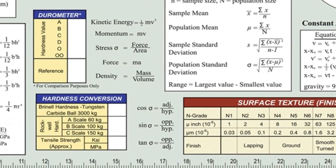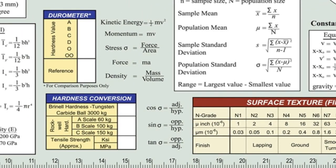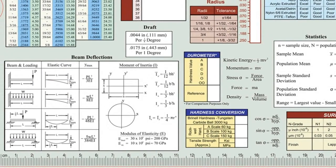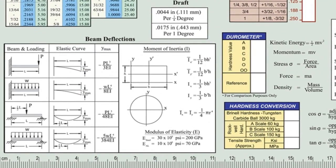Formulas for kinetic energy, momentum, stress, force, density, as well as sine, cosine, and tangent are just to the left of those in the middle of the chart. The beam deflections table includes beam loading diagrams and formulas for maximum deflection and moment of inertia.